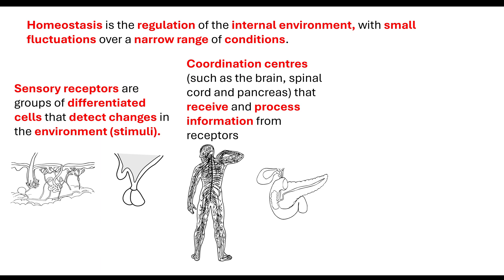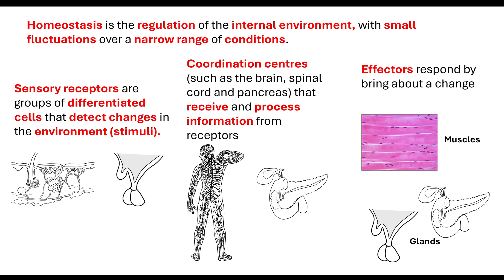Sensory receptors will then pass on that information to what's known as the coordination centre — things like your brain, your spinal cord, and it can also be your pancreas. The coordination centre will receive and process that information from the receptors, then pass it on to an effector, which is going to respond and bring about a change. Effectors are normally your muscles or your glands — muscles will contract or relax, and glands will secrete the substance they are differentiated to make.